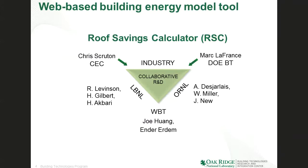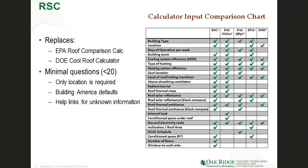A little bit about the backstory of how the Roof Savings Calculator came to be. It was a large collaboration among several people: the Department of Energy's Building Technologies Program and office, Chris Scruton from the California Energy Commission, several national labs including Lawrence Berkeley National Lab and Oak Ridge National Labs, some subcontractors and industry partners — all worked together to make the Roof Savings Calculator happen.